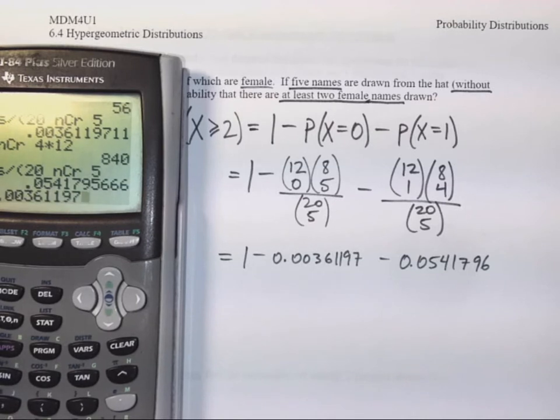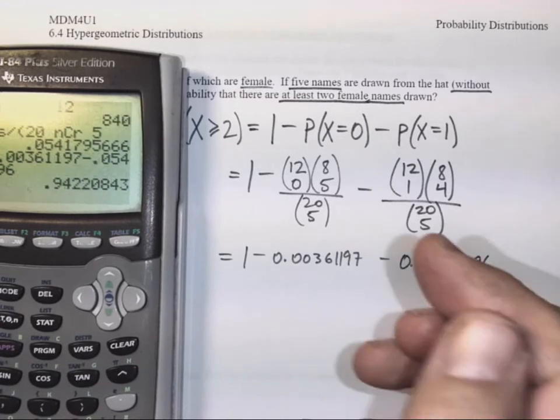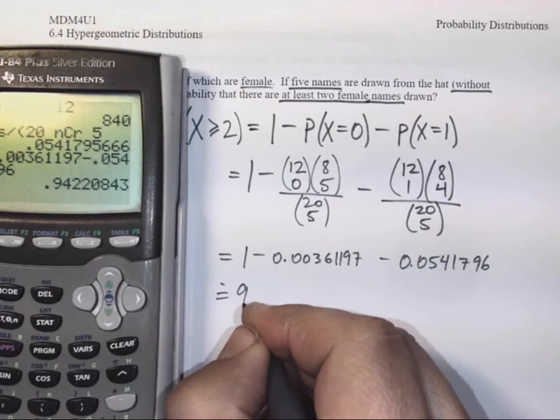And when we subtract those numbers from one, those two values that we do not want using the indirect method, we are left with a 94.22% chance of this occurring, of drawing at least two female names out of this hat.